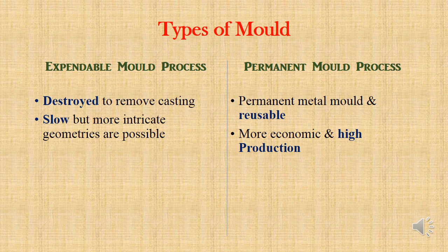There are two types of mold process. One is expandable mold process and other is permanent mold process. In expandable mold process, for example sand casting, we have to break the mold to remove the final product outside. It is slow but more intricate geometrics are possible. In permanent mold process, mold is made of metal so we can reuse it, which is economical, but one disadvantage is ferrous alloys cannot be used here.